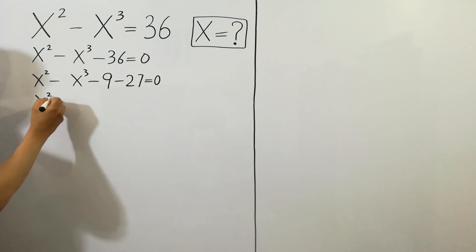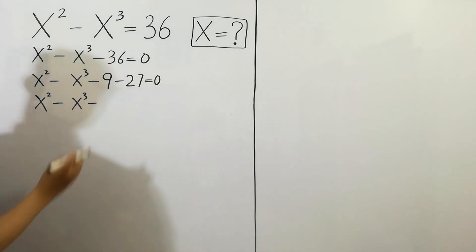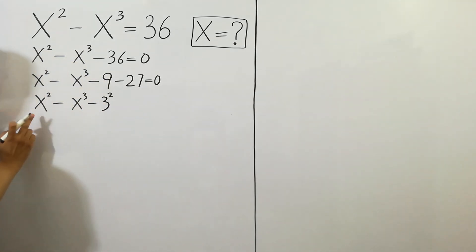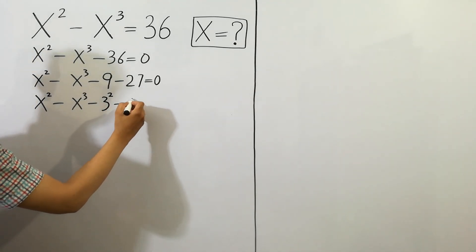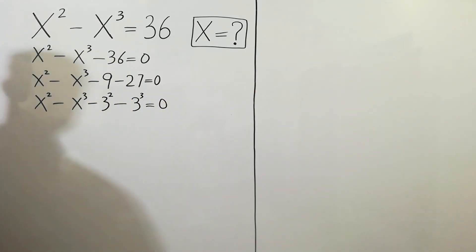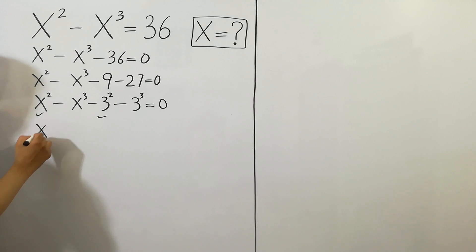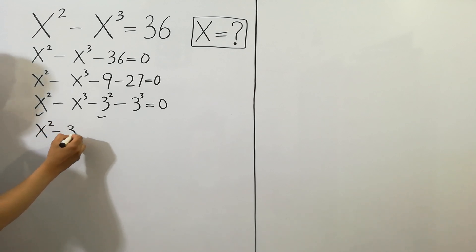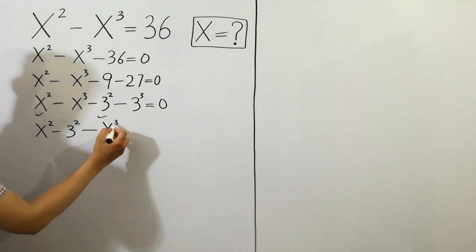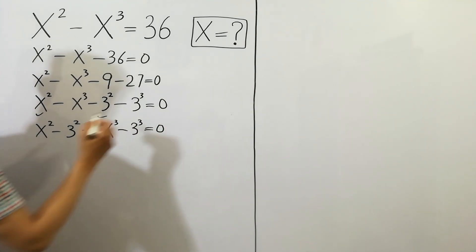And next, x squared minus x cubed minus 36 — here 3 can be written as 3 squared and 27 as 3 cubed, which corresponds to x squared minus 3 squared, and next minus x cubed minus 3 cubed, is equal to 0.